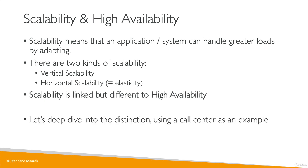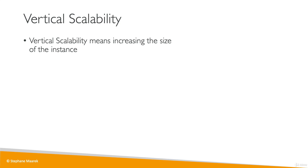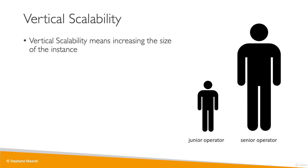Let's do a deep dive and we'll be using a call center as an example. Imagine we have a call center and we just receive calls. Let's see what it means to be scalable in that case. First, let's deal with vertical scalability. In AWS, when you are vertically scalable, that means you can increase the size of the instance. For our call center, say we have a junior operator and we were able to upgrade that operator — we would get a senior operator. The senior operator can handle a lot more calls than the junior operator because they're more experienced. So this is what vertical scalability looks like: upgrading a junior operator into a senior operator.